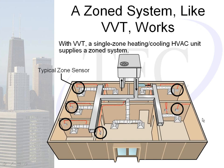When the sun is rising on the east, the southeast and northeast corners will call for cooling. On the west side of the building, there may be no need for cooling because it's cooler or unoccupied. Those dampers will close, the east-side dampers will open, and the rooftop will go into cooling mode, providing air where it's required.